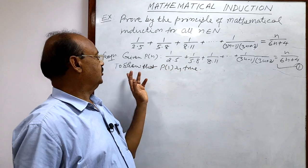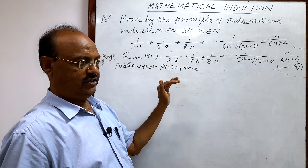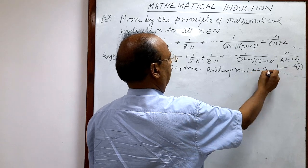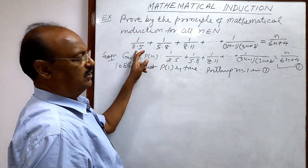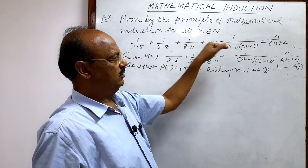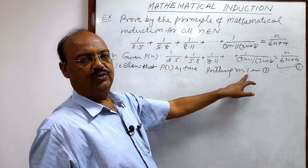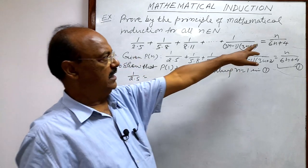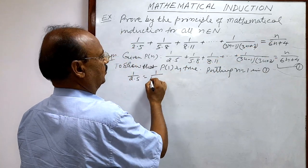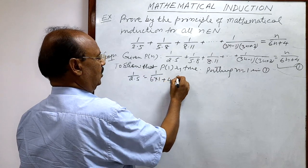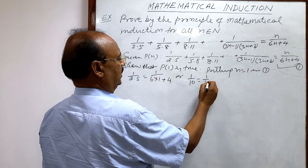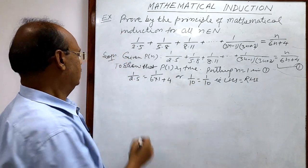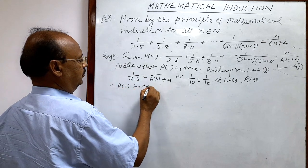First step: we show that P(1) is true. For this, we put n = 1 in relation number 1. Since the total number of terms is n, putting n = 1 gives only one term on the left-hand side: 1/(2×5). The right-hand side becomes 1/(6×1+4) = 1/10. Since LHS = RHS = 1/10, P(1) is true.